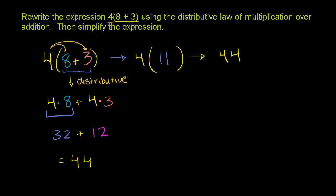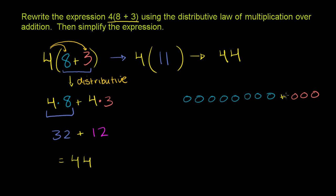Now let's think about why that works. Let's visualize just what 8 plus 3 is. Let me draw 8 of something — 1, 2, 3, 4, 5, 6, 7, 8. And then we're going to add to that 3 of the same thing — 1, 2, 3. So you can imagine this is what we have inside of the parentheses: 8 circles plus 3 circles.